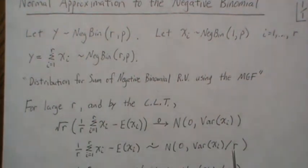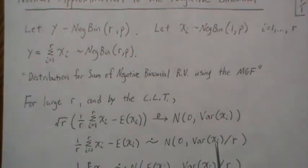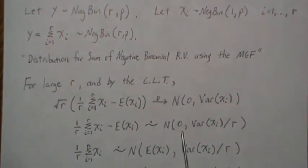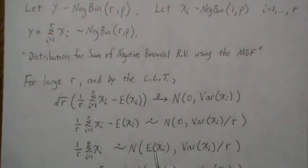So once we divide both sides by r, and then it goes n squared, this is approximately a normal distribution. And here, so then we add the mean over, and then it becomes approximately normal with mean this and variance this.